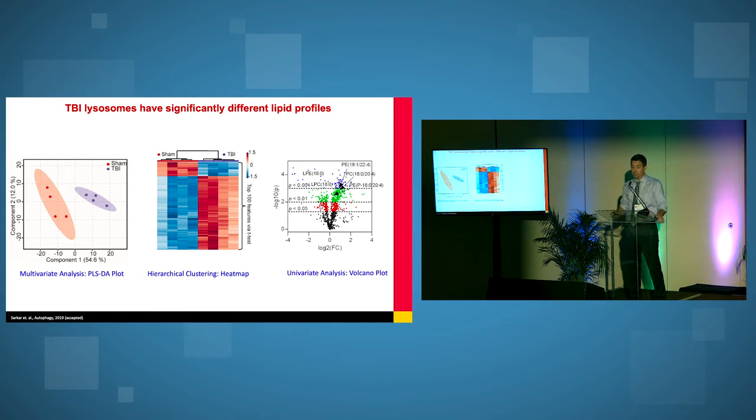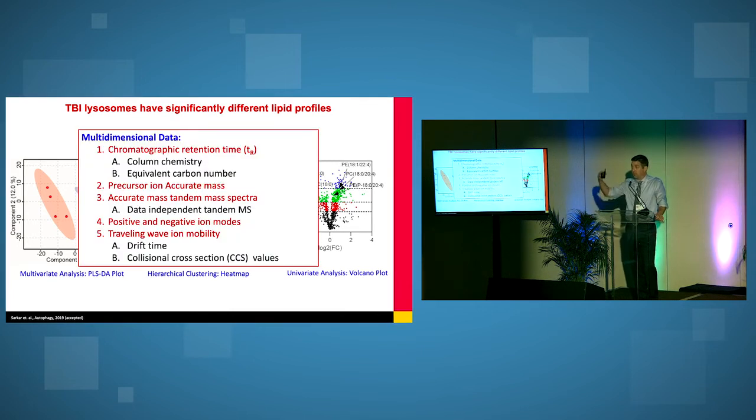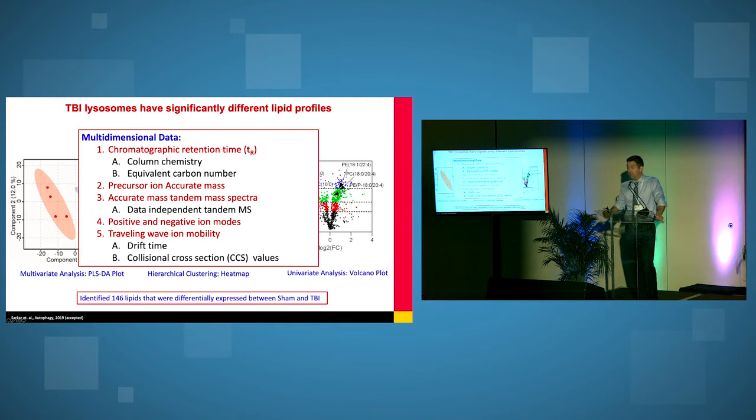We can do a PCA, a PLSDA plot. We can do a heat map. A volcano plot. At the end of this process, like I said, we get this multi-dimensional data. At the end of that, we are able to confidently identify 146 lipids that were differentially expressed between our sham and our TBI.